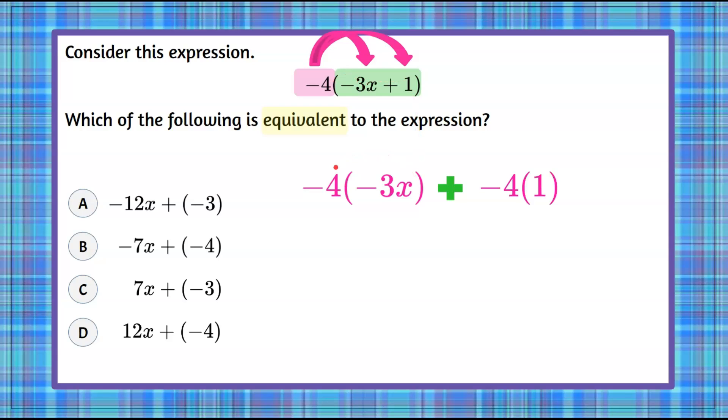Now the product of negative 4 and negative 3x is going to be positive seeing as they have the same sign. 4 times 3 is 12 times x and now we're going to do the product of negative 4 and 1.